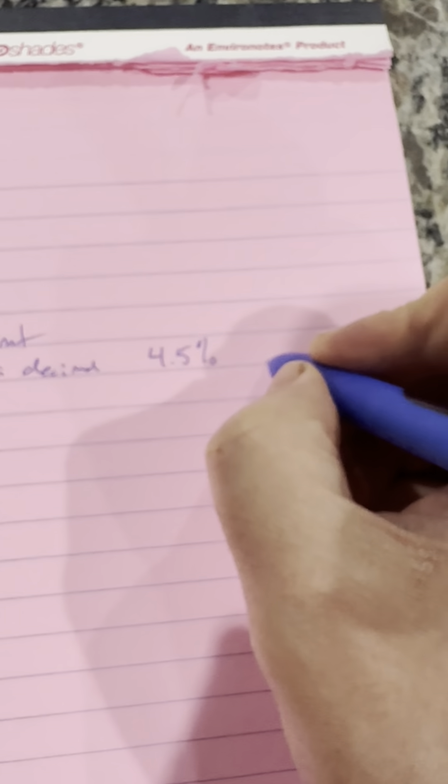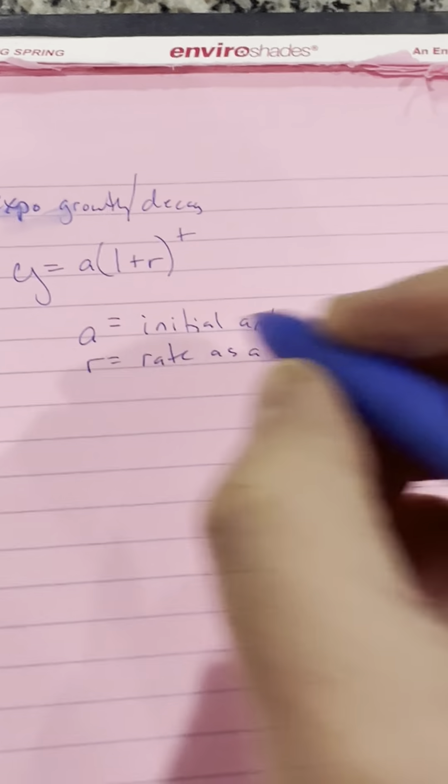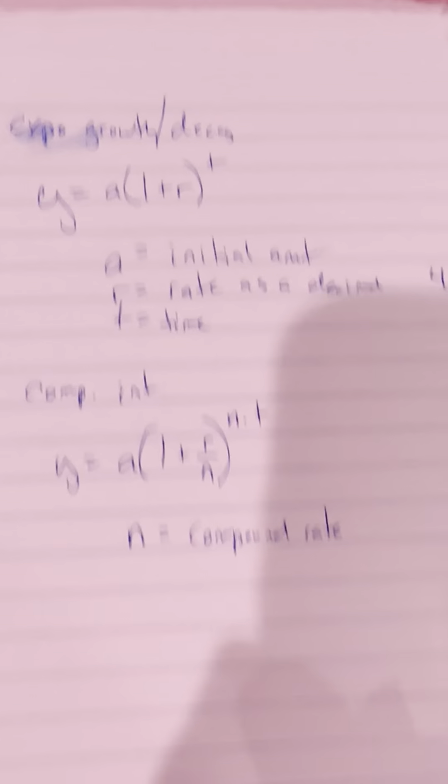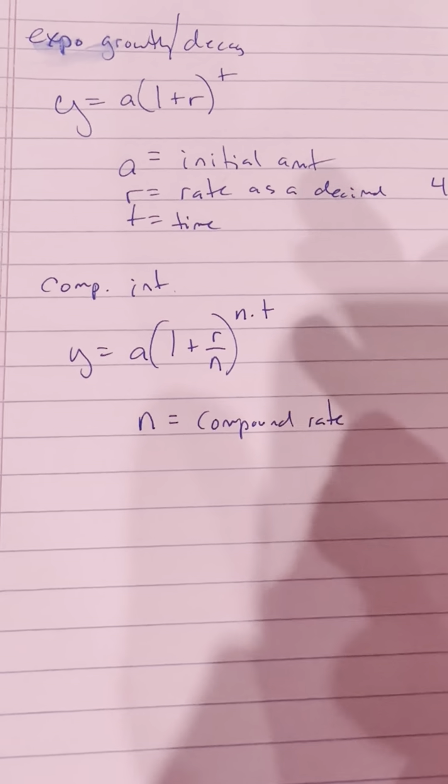You need to know exponential growth and decay. The formula is y equals a times the quantity of one plus or minus r to the t power. A is the initial amount — like what we start with. R is the rate of growth or decay as a decimal. So if we had a 4.5% growth, that's 0.045. T stands for time — it's usually in years, but the problem will tell you.